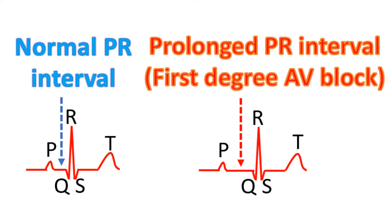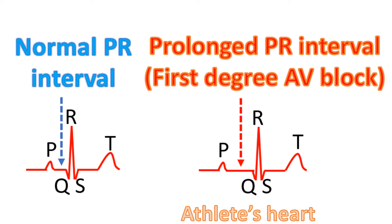Isolated first degree AV block, or prolongation of the PR interval, is not significant if it is only a moderate prolongation. Significance is mainly for any associated abnormality of the heart which may progress. First degree AV block can occur in healthy athletes due to the enhanced activity of the vagus nerve arising from the lower part of the brain, but this does not produce any functional abnormality.